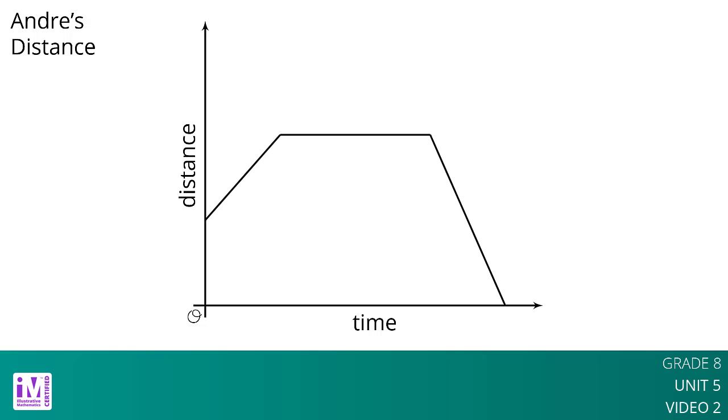Here is a graph showing Andre's distance as a function of time. For a graph representing a context, it is important to specify the quantities represented on each axis. For example, if this is showing distance from home, then Andre starts at some distance from home, maybe at his friend's house, moves further away, maybe to a park to play, then returns home.